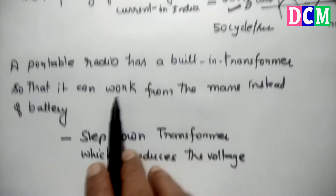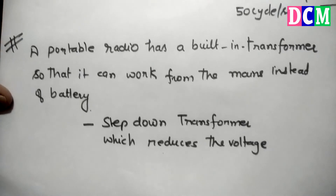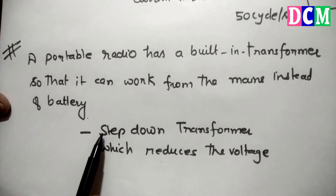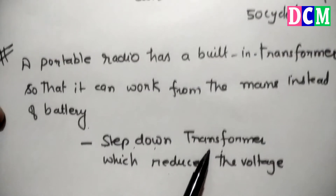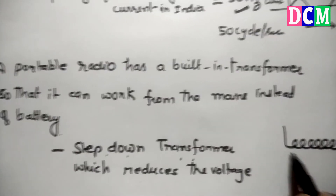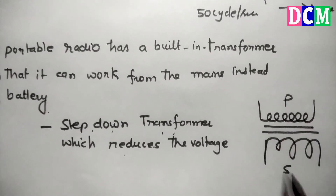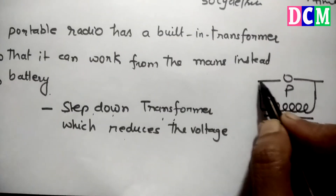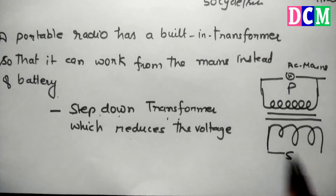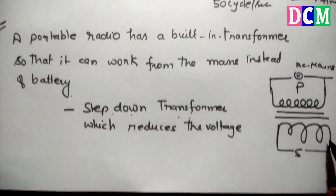A portable radio has a built-in transformer so that it can work from the mains instead of a battery. The transformer inbuilt in it is a step-down transformer, and its role is to reduce the voltage. A transformer has two coils — primary and secondary. In a step-down transformer, the number of turns in the primary is more than in the secondary. A transformer always works on AC.